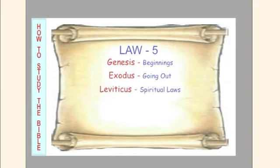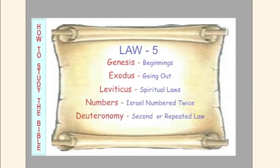Leviticus means spiritual laws — these were laws that guided this nation. Numbers: Israel was numbered twice while wandering through the wilderness. Deuteronomy means second or repeated law.